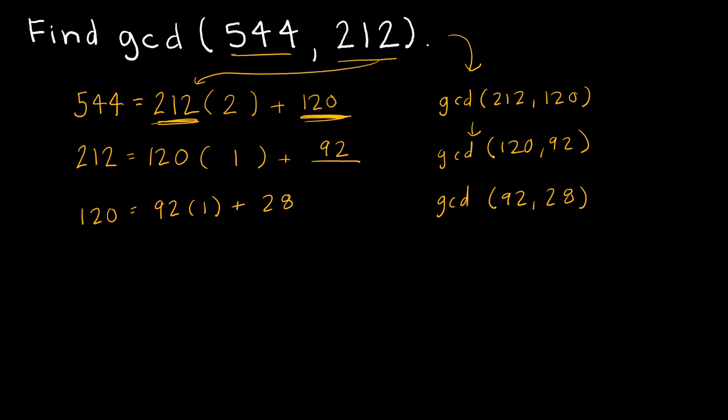So I say 92 is equal to 28 times 3 plus 8. So now I'm trying to find the GCD of 28 and 8.